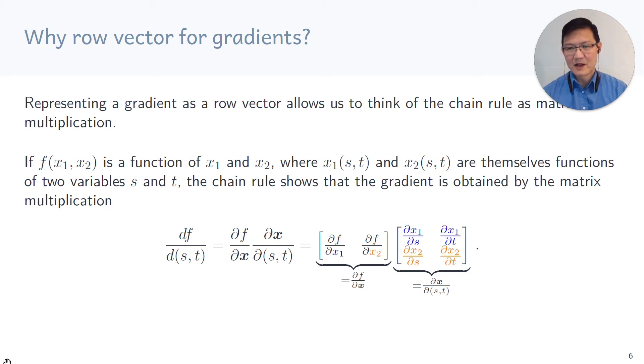Why should we represent gradients of scalar value functions as row vectors? The reason is that if we write them as row vectors, then we can think of chain rule as essentially matrix multiplication. You can see that it actually is just the matrix multiplication of the matrix of delta f, delta x, multiplied by the matrix of delta x and delta st.